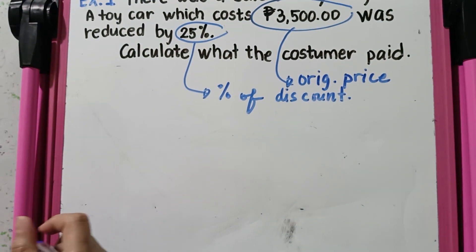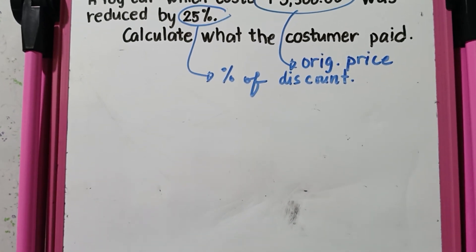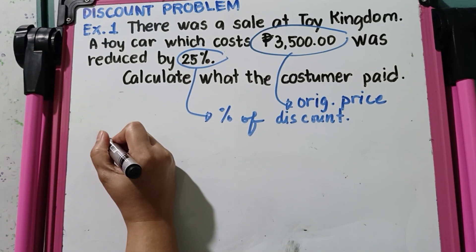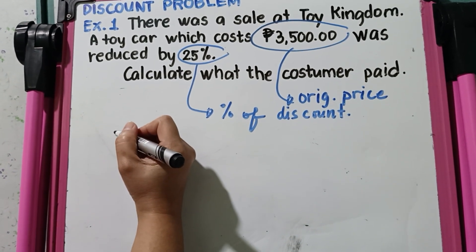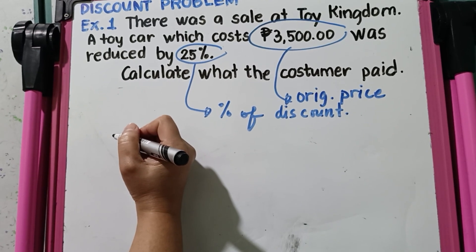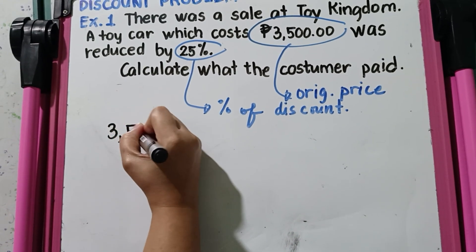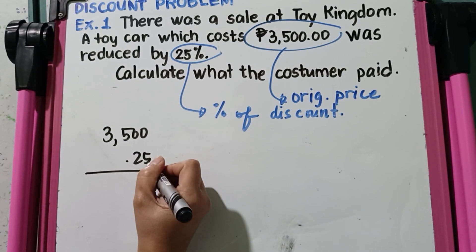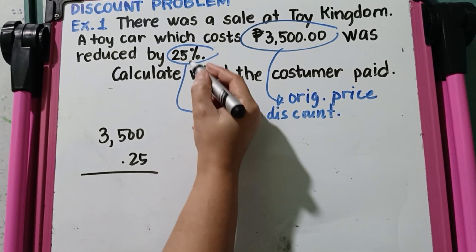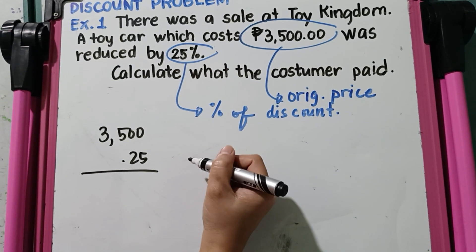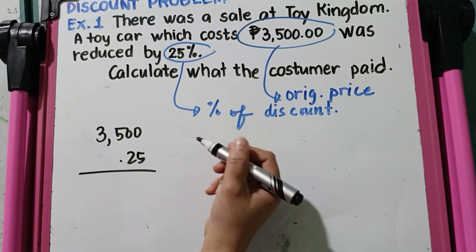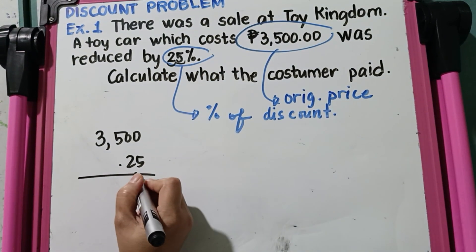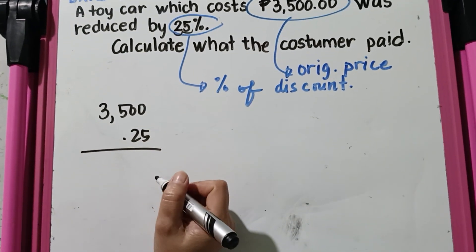To solve this, the first step is we need to get 25% of 3,500. To do that, we need to multiply 0.25 by 3,500. Why 0.25? Because 0.25 is the decimal form of 25%. To change percent to decimal, we just move the decimal point twice to the left. That's why 25% in decimal is 0.25.